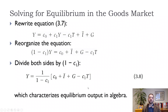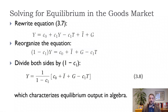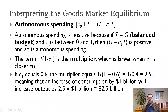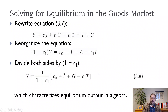So we get Y equals 1 over (1 minus C1) times (C0 plus I-bar plus G minus C1 times T). That's our equilibrium — if we put in values for investment, government spending, taxes, C0, and C1, we can solve for Y. This model is very simplified so it won't give a realistic number, but we can do it. Let's think about the two pieces: the bracket term (C0 plus I-bar plus G minus C1T) and the term outside (1 over 1 minus C1).